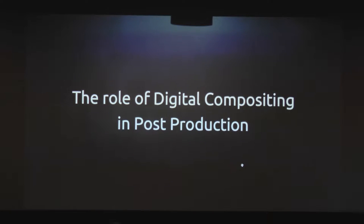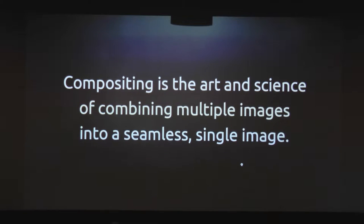So, the role of digital compositing in post-production. We're going to talk about the role of digital compositing not just in its obvious applications, but maybe some of the less obvious ones. But first, we have to understand what digital compositing is. Compositing is the art and science of combining multiple images into a seamless single result or image. It's one of the cornerstones of modern visual effects, and it's the underlying technology behind a lot of tools you probably take for granted, like Photoshop, color grading tools, and editing tools.